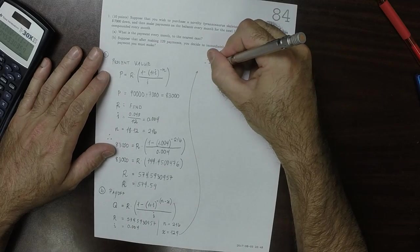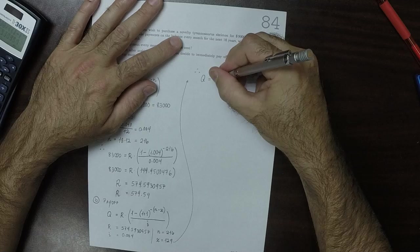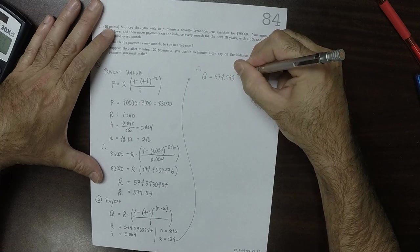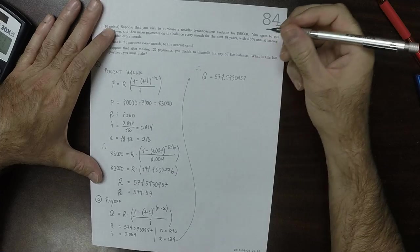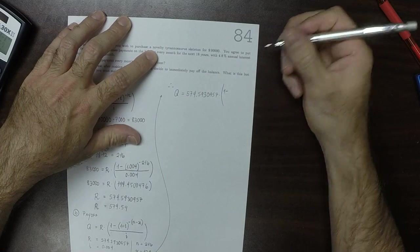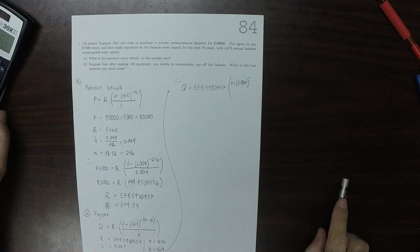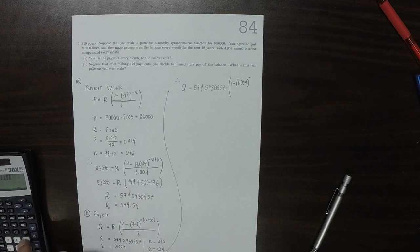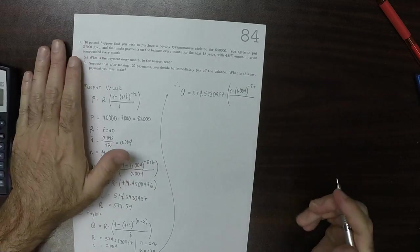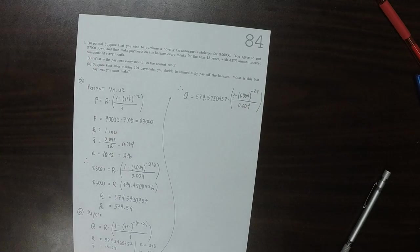So as a result, we can just plug all of that in. So that would be 574.5930957, and then multiply by 1 minus 1.004 to exponent, well, 216 minus 129, so that would be exponent negative 87, and then divide it by 0.004. That's something that can be typed directly into the calculator.